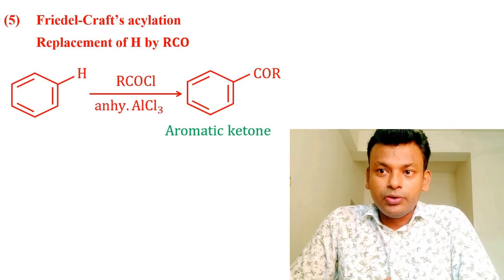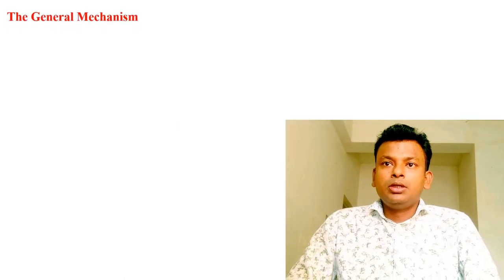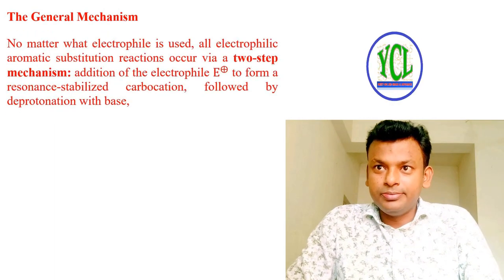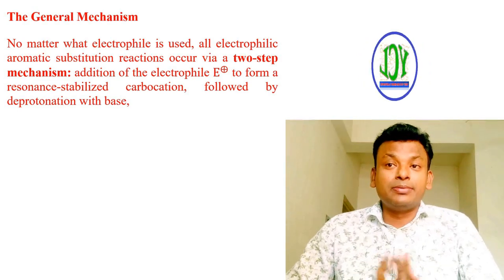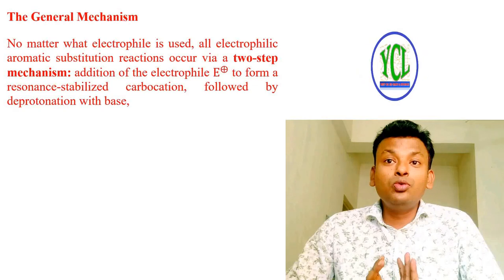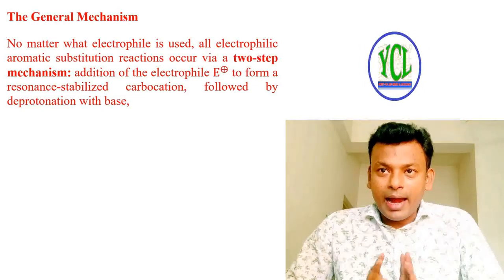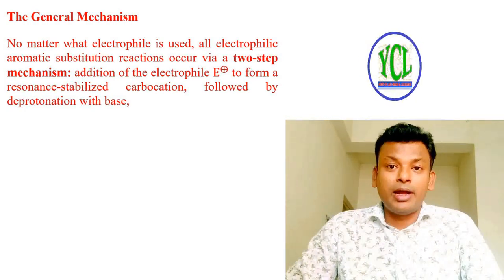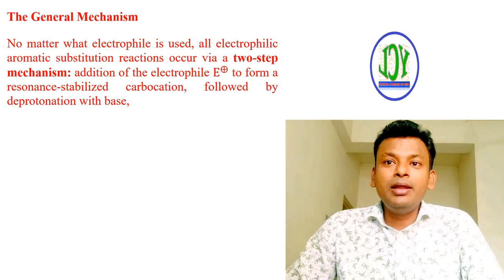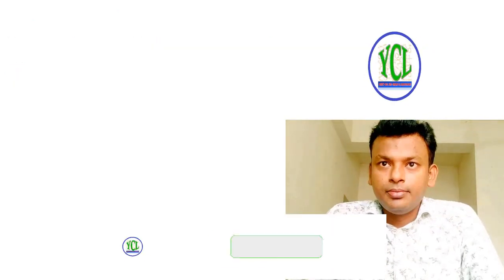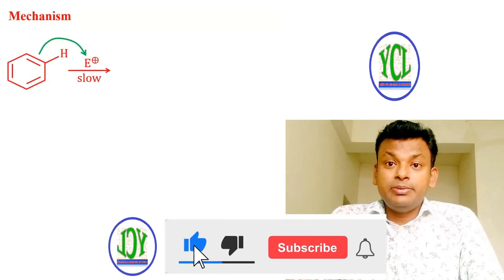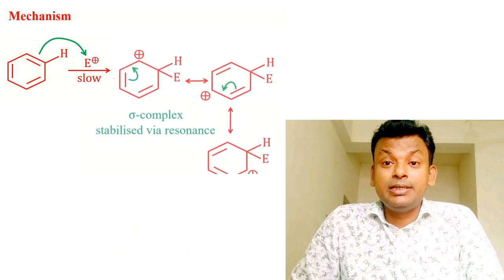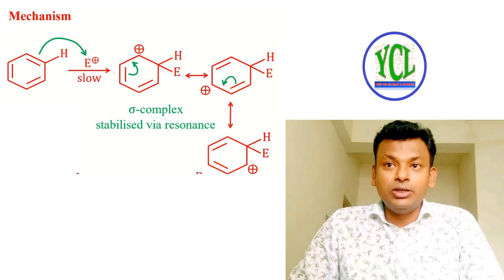The general mechanism: no matter what electrophile is used, all electrophilic aromatic substitution reactions occur via a two-step mechanism. Step one: addition of the electrophile E⁺ to form a resonance-stabilized carbocation called the sigma complex. Step two: deprotonation with a base. The electrophile first reacts with the pi bond to form the sigma complex, which is stabilized via resonance.